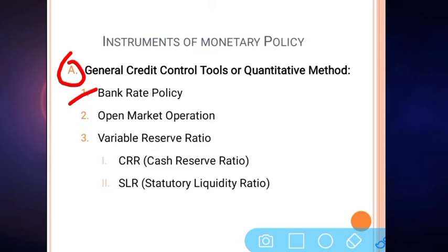For example, previously the RBI provided finance to commercial banks at 10 percent, and commercial banks lent this money to retail customers at 11 percent, earning a 1 percent margin. Now, there is deflation and a slowdown with shortage of money in the market. So RBI decreases the bank rate from 10 percent to 9 percent, giving banks scope to reduce their loan rates as well.